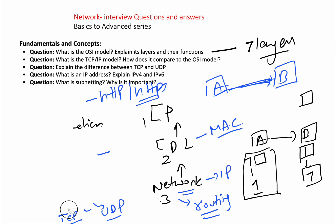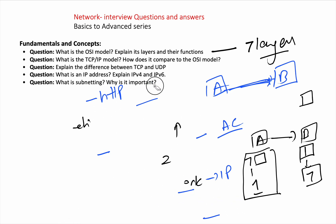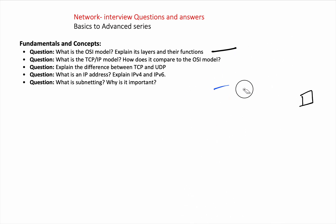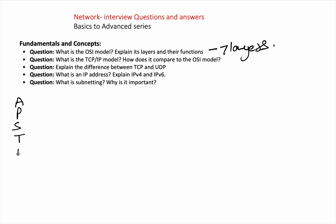Now, what is the TCP/IP model? We've moved on from OSI to TCP/IP — but why? The first question should be: why did we move? We already had seven layers in OSI, so why are we moving from seven to four? In TCP/IP we have: Link layer, Internet layer, Transport layer, and Application layer.